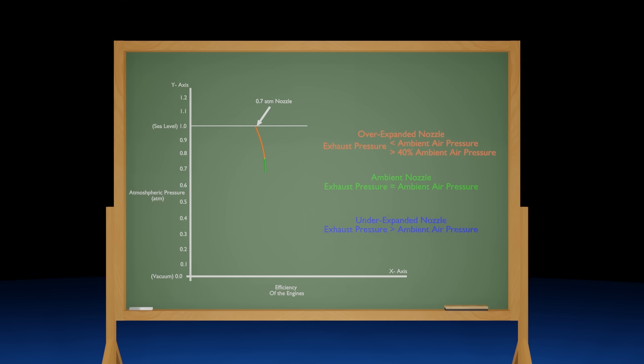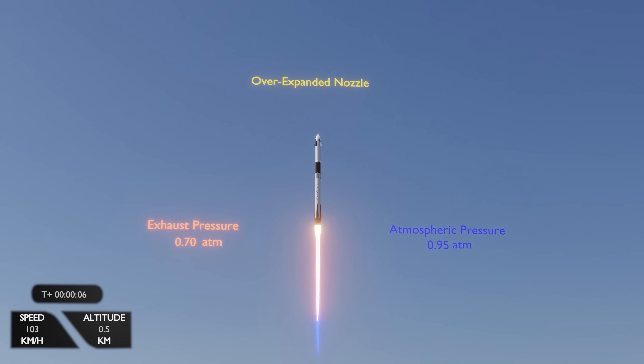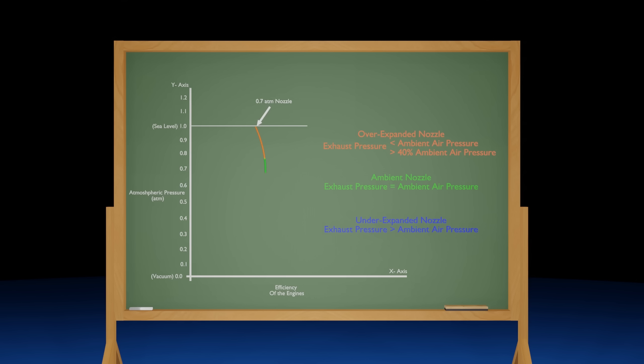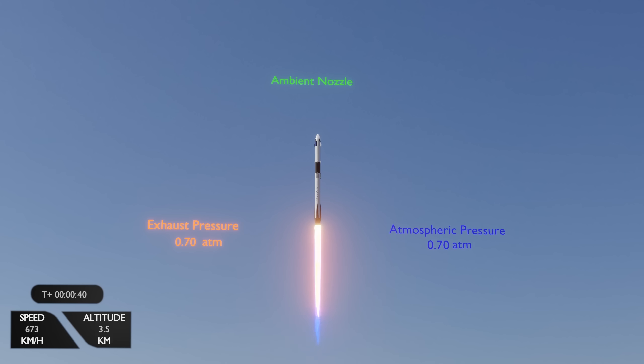But the rocket doesn't stay over-expanded for long. As the rocket climbs in altitude into lower air pressure, eventually the ambient air pressure will be equal to the exhaust pressure. This happens at roughly 40 seconds into flight, when the rocket is 3.5km in altitude. The rocket now has an ambient nozzle, and this is where the engine is most efficient. Because remember, the closer the exhaust pressure is to the ambient air pressure, the more efficient the rocket will be. An ambient nozzle looks like this, a perfect column of flame, as both pressures are equal.